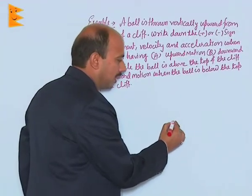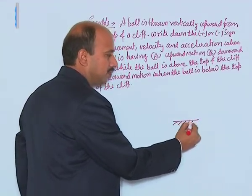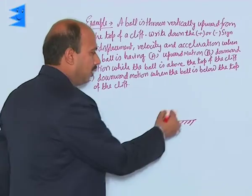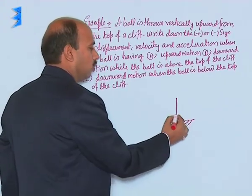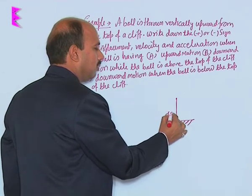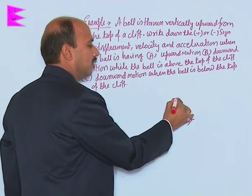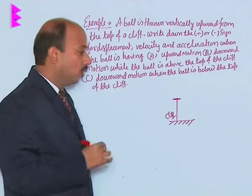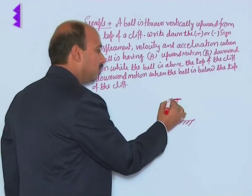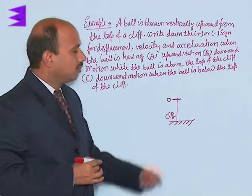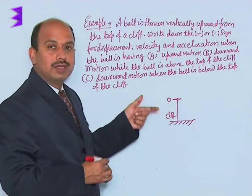Let us make a diagram first. This is the ground level. Here I have taken a cliff. This point is here, this height is taken for cliff. From here we are throwing the ball, and this we are taking as origin.